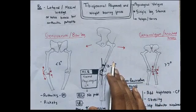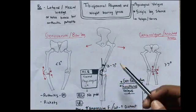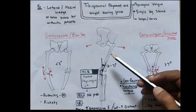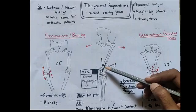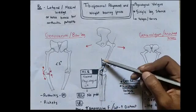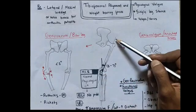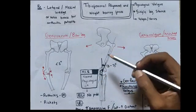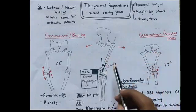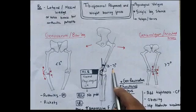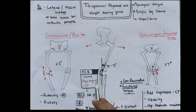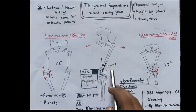What is tibiofemoral alignment? In a normal human being, the tibia is vertical and the femur is slightly medially angled. The angle formed between the vertical line of the tibia and the slightly angled line of the femur is called the tibiofemoral angle, which is 5 to 7 degrees. This is called the normal physiological angle — a very important MCQ point to remember.